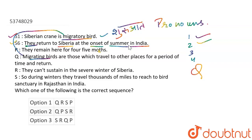Which sentence follows Q? 'They cannot sustain in the severe winter of Siberia.' Where can they stay? They are migratory birds. So R follows — they cannot sustain in the severe winter of Siberia. After that, what do they do? During winters, they travel thousands of miles to reach the bird sanctuary in Rajasthan, in India. So the next sentence is S.